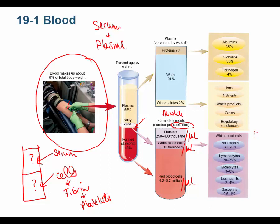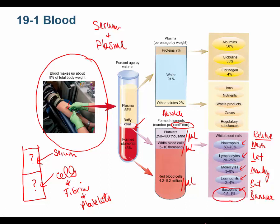In addition to absolute counts, there are relative values — the percentage of each white blood cell type. For neutrophils, memorize approximately 60–65%. There's a useful mnemonic: Never Let Monkeys Eat Bananas — Neutrophil, Lymphocyte, Monocyte, Eosinophil, Basophil — representing the relative abundance of white blood cells from most to least common.